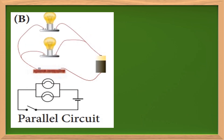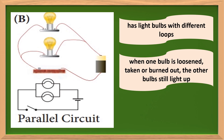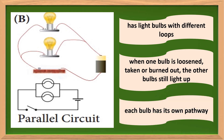A parallel circuit, on the other hand, has light bulbs with different loops. Thus, each bulb is a part of a different circuit. When one bulb is loosened, taken, or burnt out, the other bulbs still light up. This is because each bulb has its own pathway. A break in one pathway does not make all the lights go out, because electricity can still flow through the other pathways.